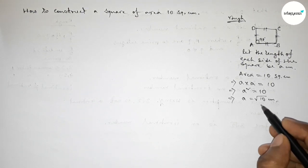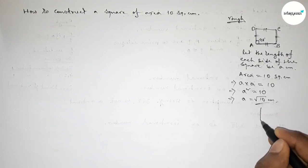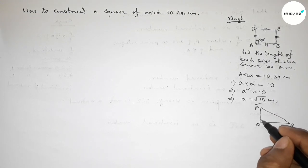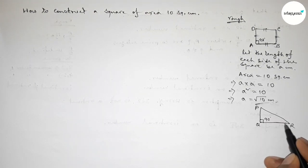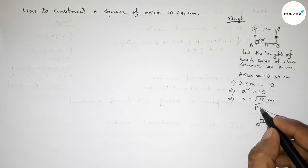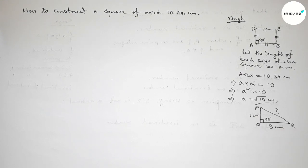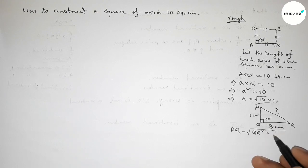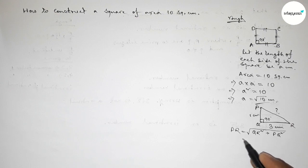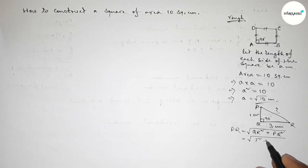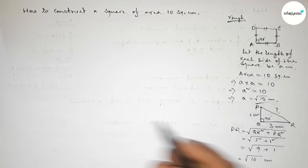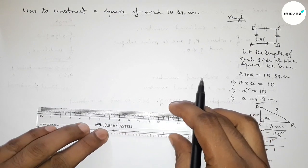Now we have to find √10. We roughly discuss a right-angle triangle PQR. If we take the base QR equal to 3 centimeters and the perpendicular PQ equal to 1 centimeter, then by Pythagoras' theorem the hypotenuse PR = √(QR² + PQ²) = √(3² + 1²) = √(9 + 1) = √10 centimeters.